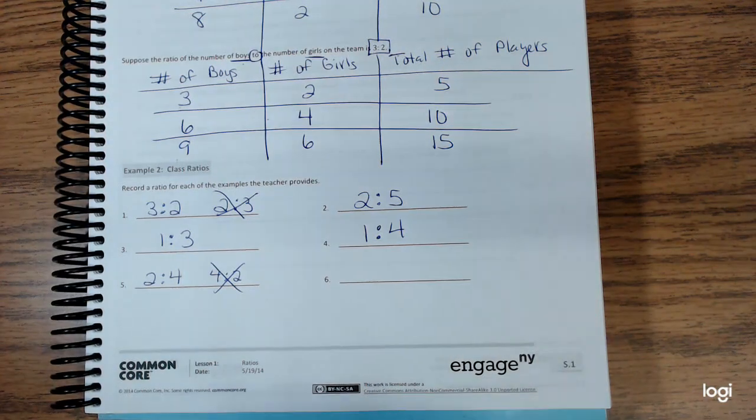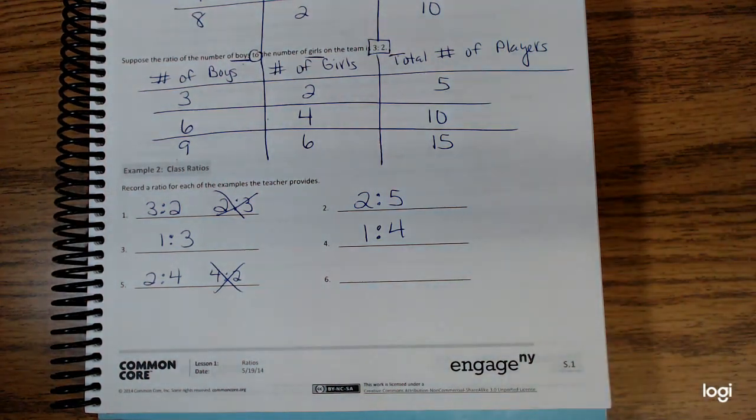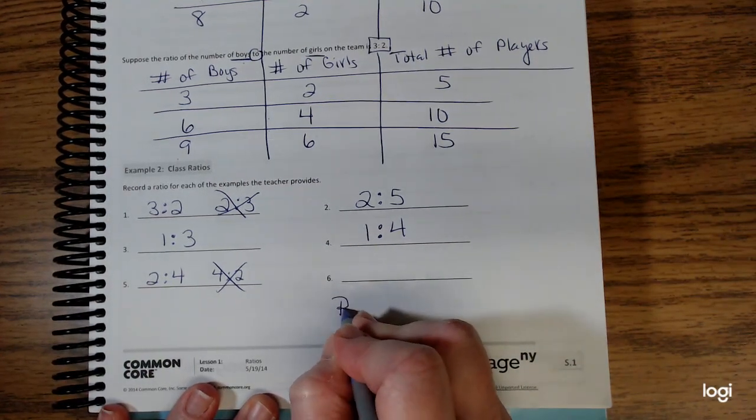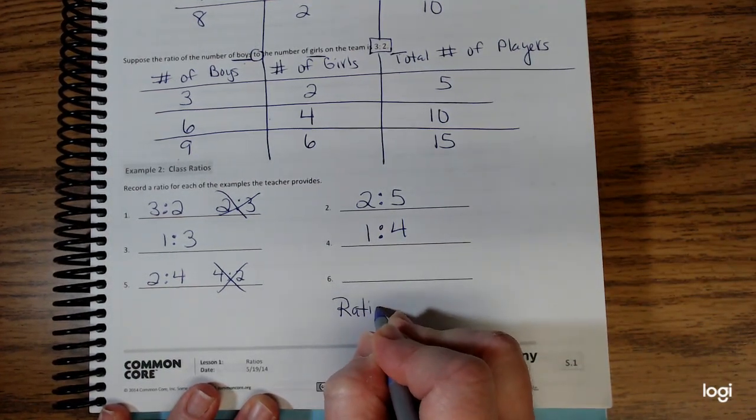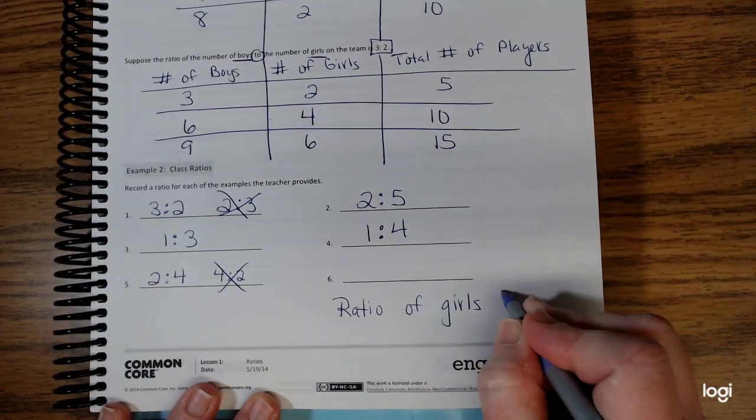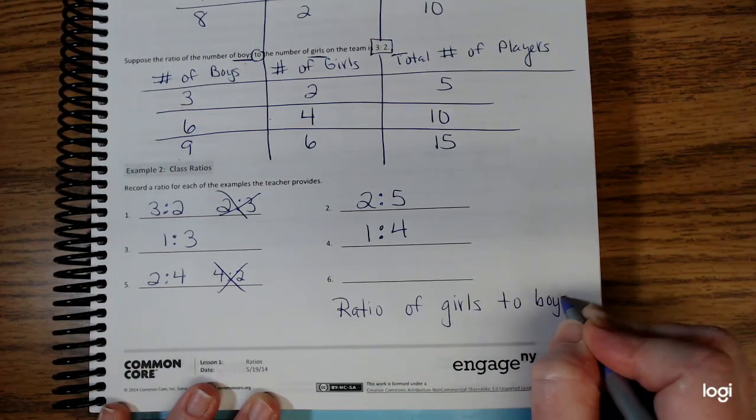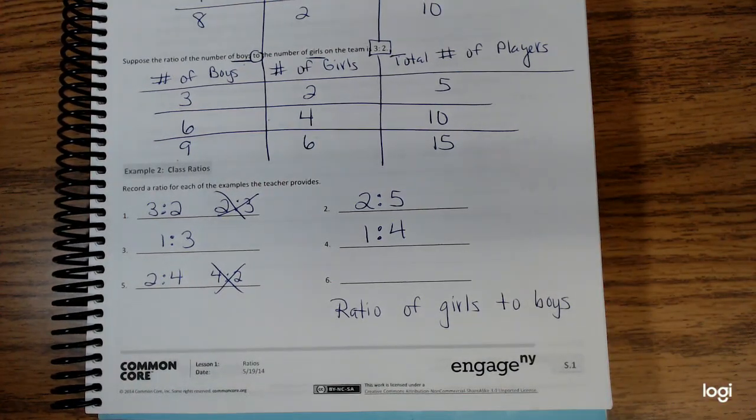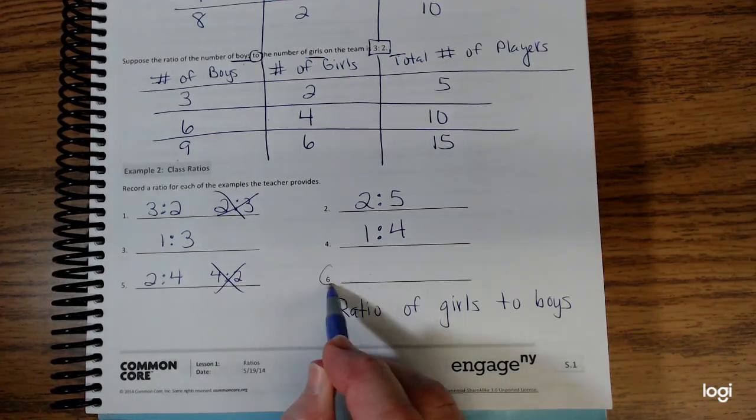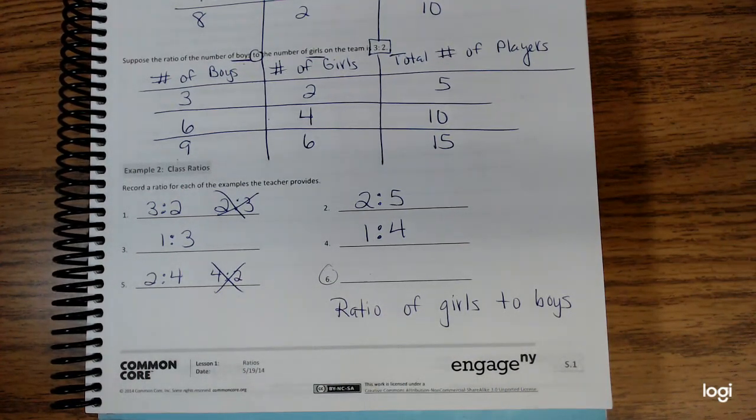Problem number six, the last one: I want you to think about your household where you live, and I would like you to tell me the ratio of girls living in your home to boys. In my home, I have two girls, my daughter and myself, and there are two boys, my husband and Jacob, so I would put 2 to 2. For problem number six, put the ratio of girls to boys that live in your home. When you're ready, go ahead and turn over to the next page.